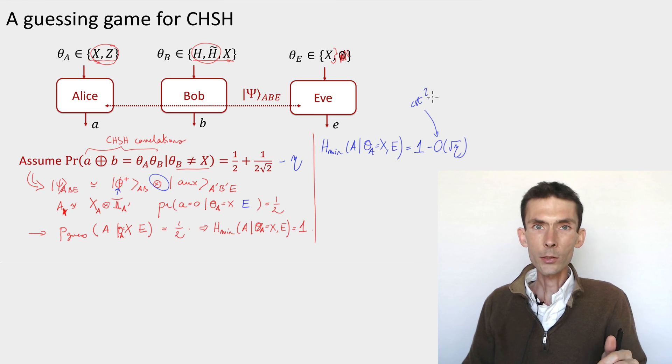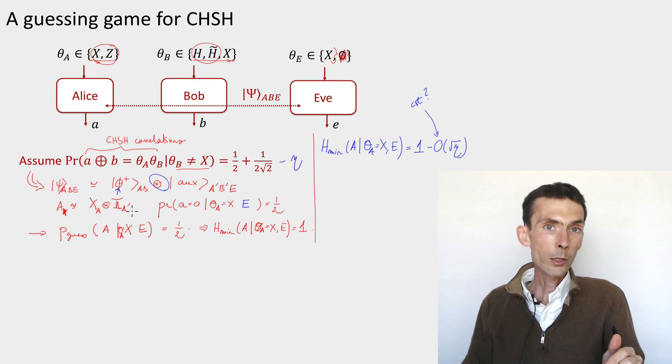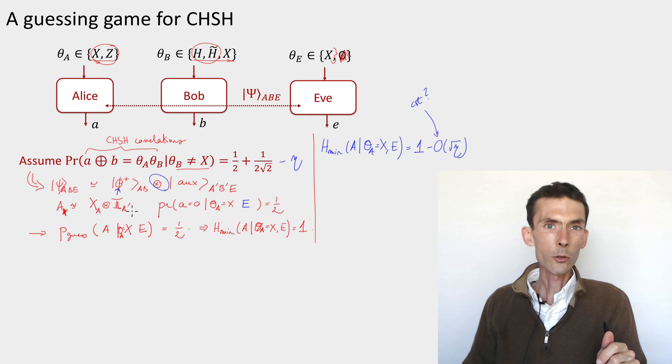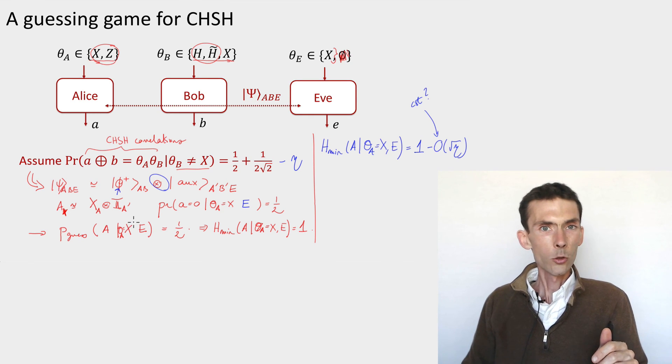We need to perform the CHSH test instead of simply checking equality of outputs when the inputs were the same. But provided we perform this test, which we can also perform classically just by checking the CHSH condition, then we are able to derive a bound on the guessing probability of Eve. And that's the only thing that we were missing in order to obtain a proof of security of our DIQKD protocol. So we'll look into that in the next video.